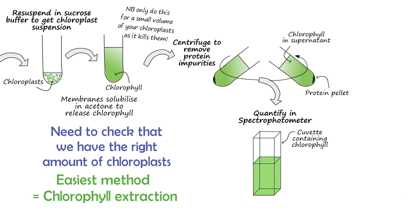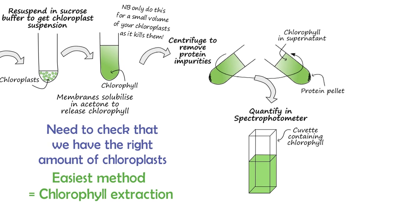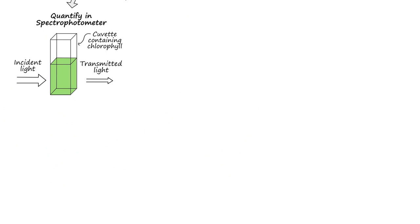The spectrophotometer measurement relies on the fact that chlorophyll directly absorbs light. If we shine a light through the sample, we can compare the amount of light going into the sample, called the incident light, with the amount coming out of the sample, called the transmitted light. A more concentrated chlorophyll solution will absorb more light, so there'll be a bigger difference between the intensity of the incident and the transmitted light.